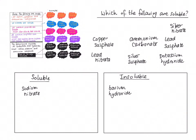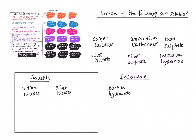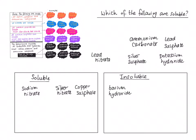Silver nitrate: we know that all nitrates are soluble, so silver nitrate is soluble. Copper sulfate: the rule is that all common sulfates are soluble, except lead sulfate, barium sulfate, silver sulfate, and calcium sulfate. Copper sulfate isn't on the exceptions list, so copper sulfate is soluble.